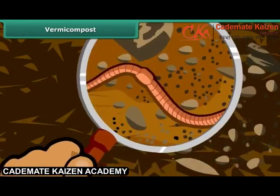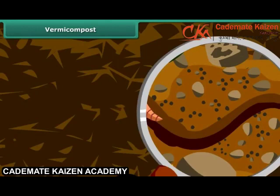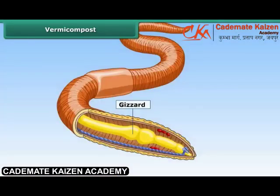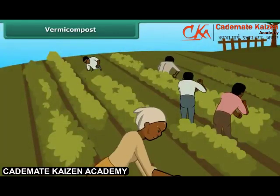Students, you might have seen earthworms in the rainy season. They convert kitchen waste into compost — this is known as vermicomposting. The red worms used in vermicomposting do not have teeth. A special structure called a gizzard is present in them, which crushes down the food. These worms cannot live in hot or cold environments; therefore, moisture is required in the formation of vermicompost. The compost obtained from vermicomposting is used in agriculture.